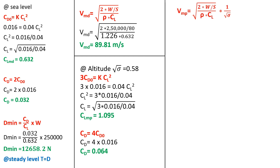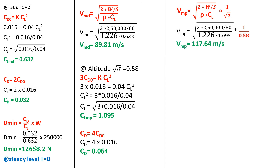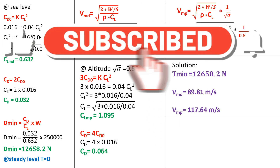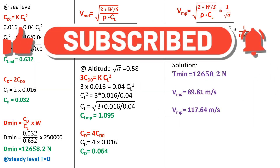The last part of the problem is to find the true airspeed at altitude. We use the same formula as before, with an additional factor of 1 divided by square root of Sigma. Substituting all given and found values, the true airspeed at minimum power condition at altitude is found to be 117.64 meter per second. Thus the minimum thrust, true airspeed at sea level, and true airspeed at altitude have all been determined. Thanks for watching, and for more videos do subscribe to our channel.